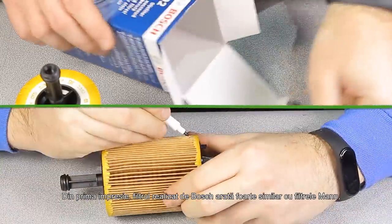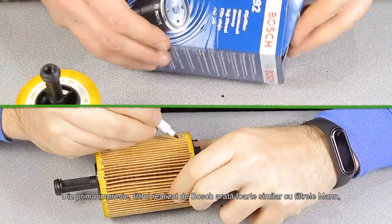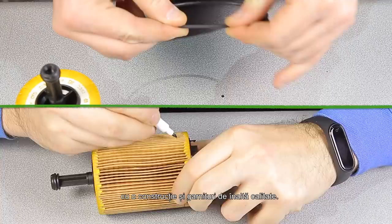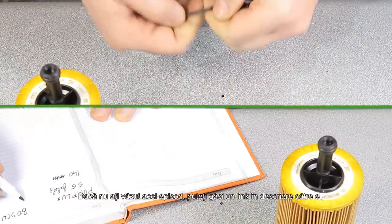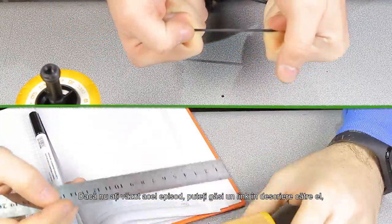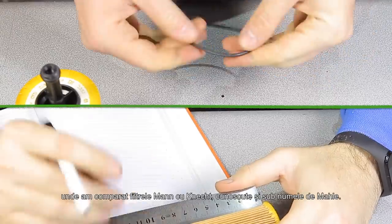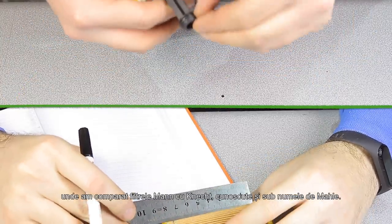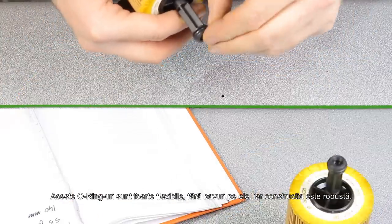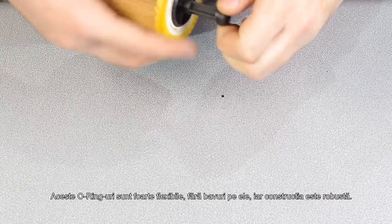From the first impressions, the filter made by Bosch looks very similar to the Mann filters with high quality construction and seals. If you haven't seen that episode, you can find the link in the description to that video where I compared Mann filters with Knecht, also known as Mahle filters.